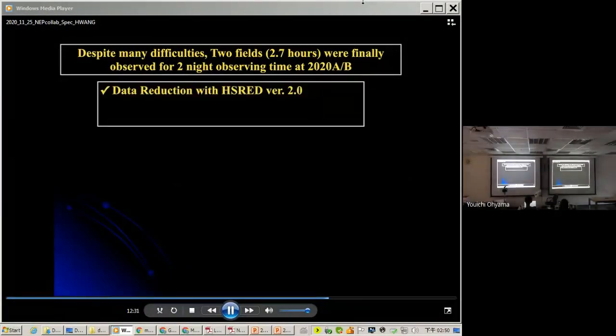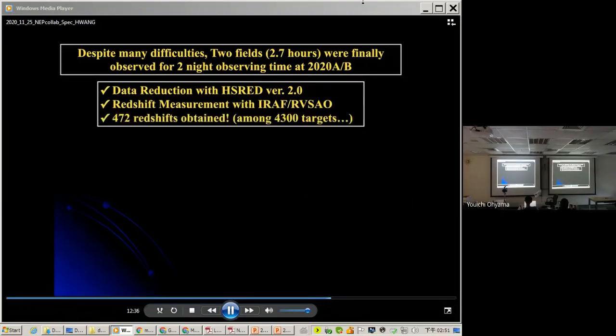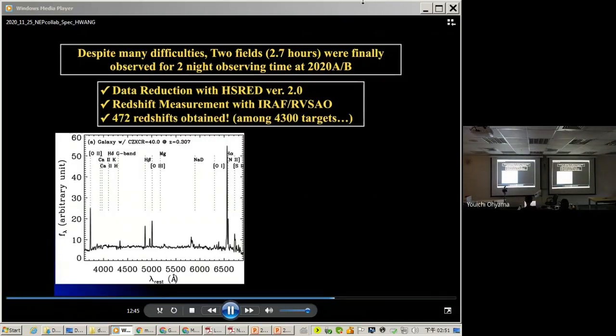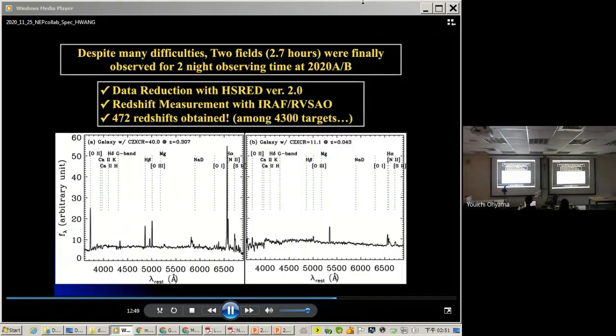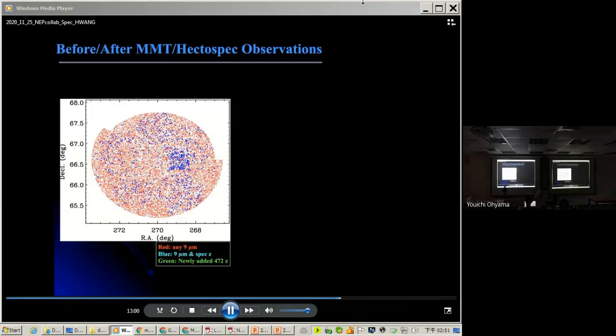Data reduction was done with the pipeline. This is one of our example spectrum. This is another example with smaller signal-to-noise ratio but here you can see many strong emission lines which was expected.